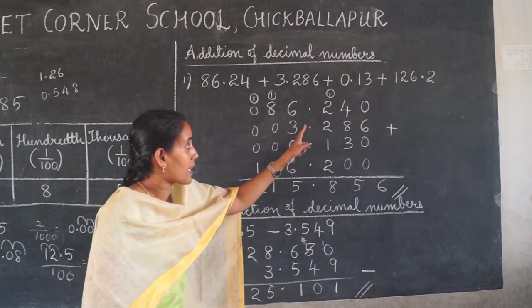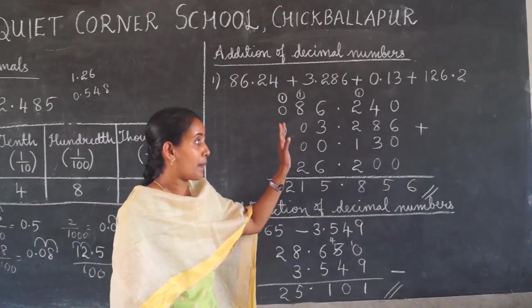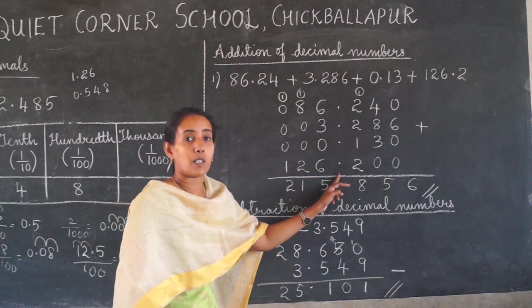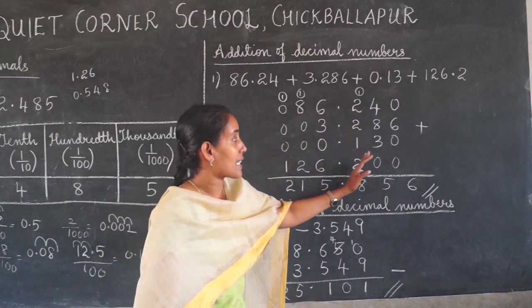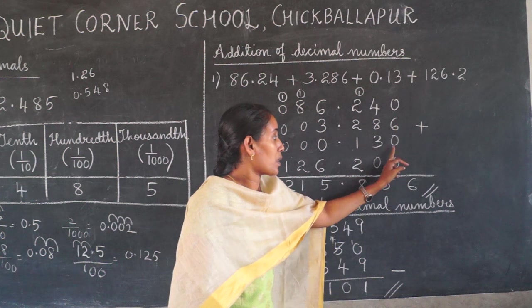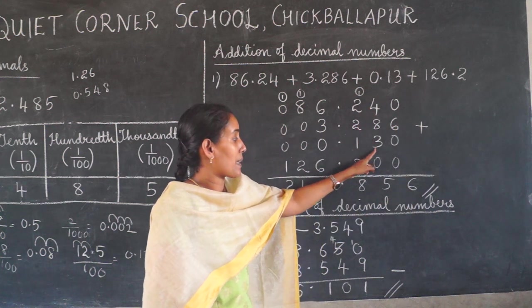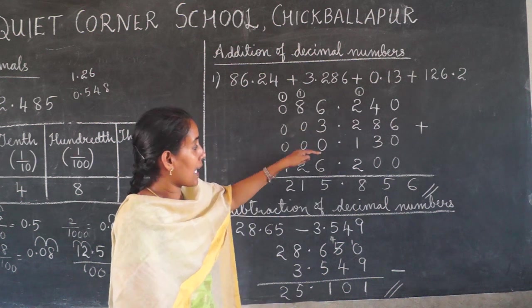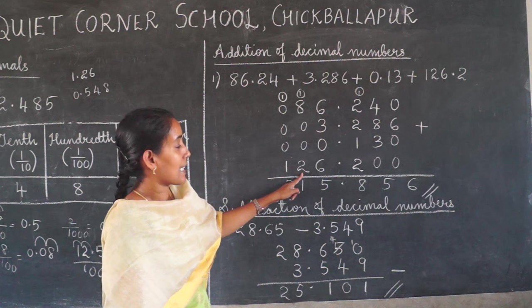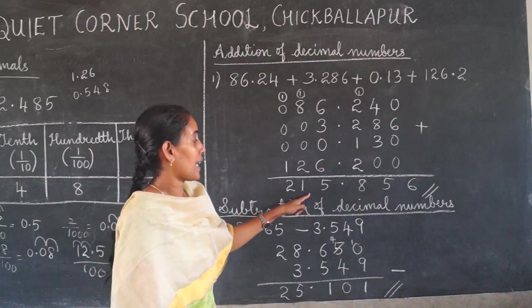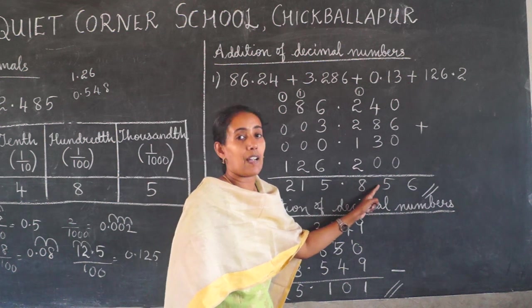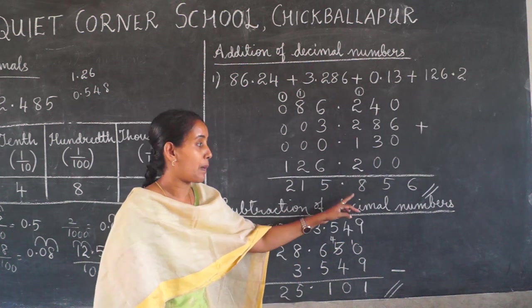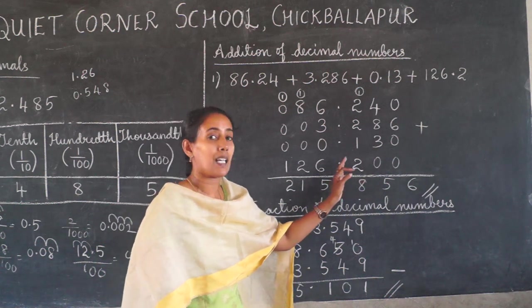All the decimal points will come in a straight line — this is very, very important while adding decimal numbers. All the decimal places should be in a straight line. Now you can easily add: 0 plus 6 plus 0 plus 0 is 6. Then 4 plus 8 plus 3 plus 2 gives us digits to carry. Working through each column with carries, the answer is 215.856. After the decimal point, mention each digit — 215.856.